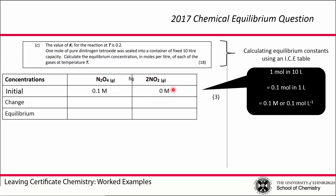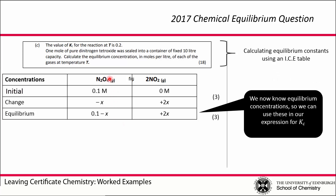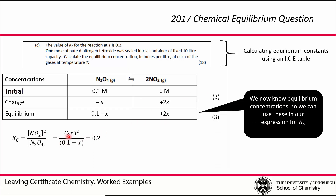Looking at how concentrations change as the reaction proceeds: from the balanced equation, for every amount that N2O4 decreases by, NO2 increases by two times that amount. We can call those amounts x, so the change for N2O4 is −x and for NO2 is +2x. Therefore the equilibrium concentrations are (0.1 − x) for N2O4 and 2x for NO2. We can now use these in our expression for Kc: [NO2]² over [N2O4] equals (2x)² over (0.1 − x), and we're told Kc = 0.2.